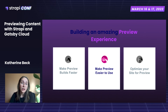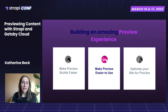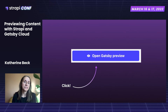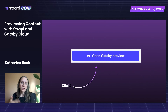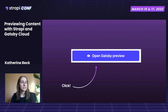So now that we've talked about some ways Gatsby has made preview faster, let's talk about making preview easier to use. I think the best way to see that is to walk through what it's like to use the open preview button. I'll talk a little bit later about how this is available with Strapi, but this is what the open preview button extension looks like for a Strapi instance, and we're going to see what it's like to use it in conjunction with Gatsby Cloud.